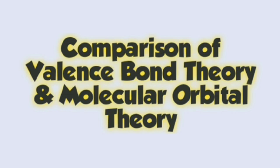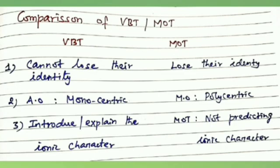Last heading: comparison of valence bond theory and molecular orbital theory. In valence bond theory, orbitals of bonded atoms cannot lose their identity. But in MOT, orbitals of bonded atoms lose their individual identity. In VBT, atomic orbitals are monocentric, but molecular orbitals are polycentric. VBT introduces a special form to explain the ionic character in a bond, but MOT is not capable of predicting ionic character. VBT cannot explain the paramagnetic nature of oxygen, but MOT can explain the paramagnetic nature of oxygen.